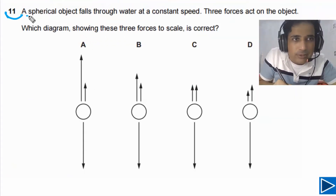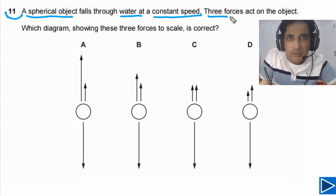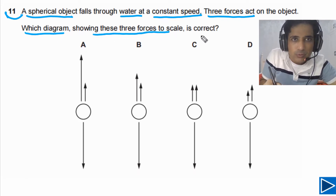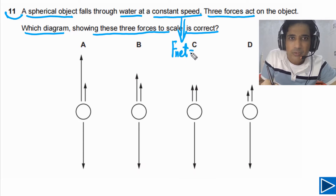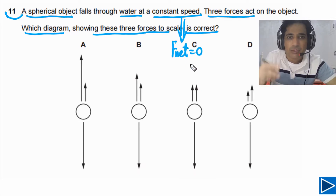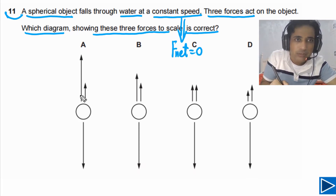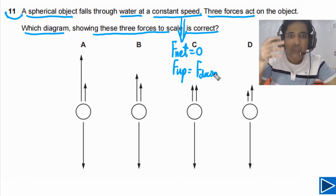For question 11, it is given that a spherical object falls through water at a constant speed. Three forces act on the object — which diagram showing these three forces to scale is correct? We need to understand that constant speed simply means F net on the object is equal to zero. It simply means that forces are balanced, so the sum of upward forces has to be equal to the sum of downward forces. This is the key concept we need.